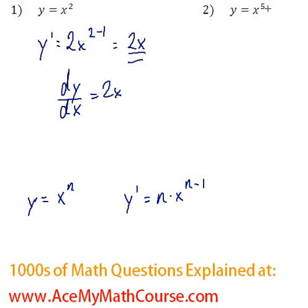Now our n is 5, y prime is 5x to the power of 5 minus 1. So y prime is going to be 5 times x to the power of 4. That's it, so that's as far as we go.